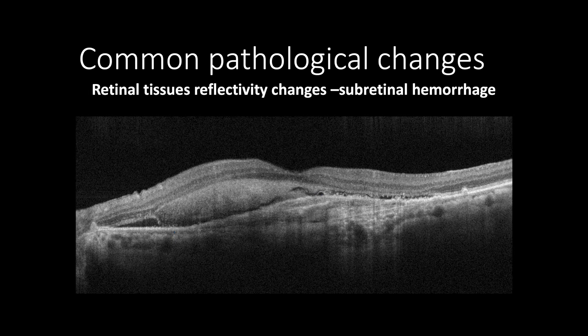This is a case of advanced neovascular age-related macular degeneration causing accumulation of subretinal fluids and blood, which appears as homogeneous hyperreflective with smooth regular borders casting shadow artifact.